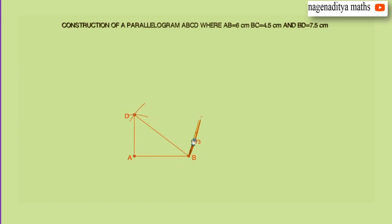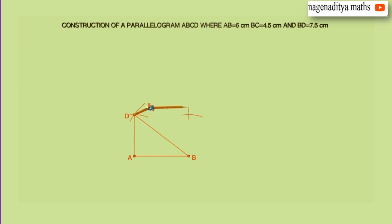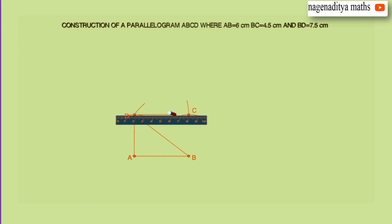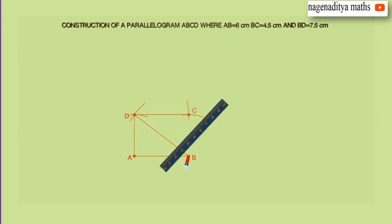From point B draw an arc with BC equal to 4.5 centimeters, and from point D draw another arc intersecting the previous arc at C, where DC equals 6 centimeters. Now join B and C, and D and C. We get parallelogram ABCD.